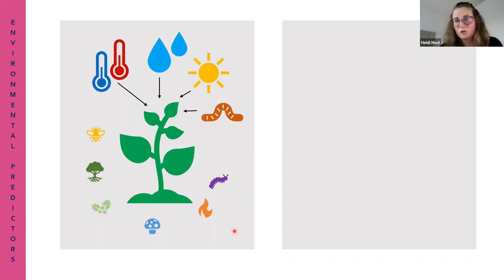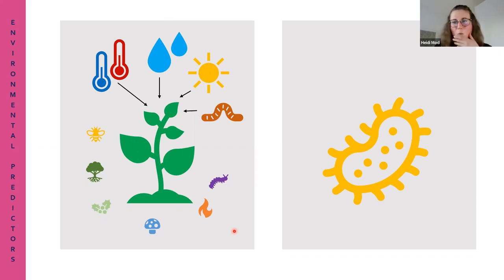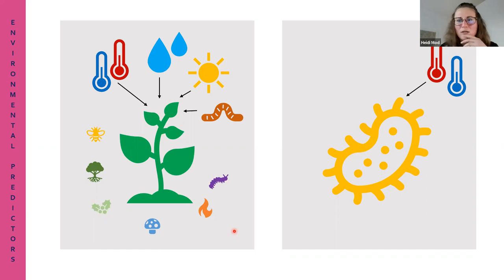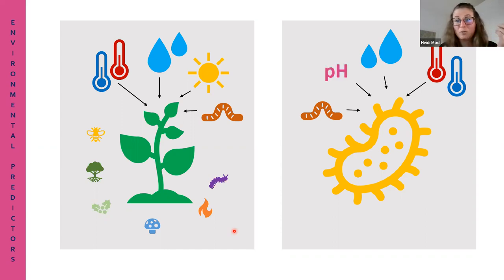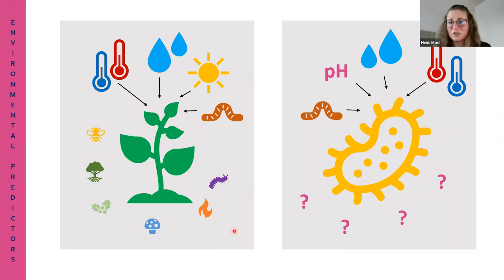We know quite well what drives the distribution of plant species, so one would think it's easy to choose the right predictors to build an SDM for a plant. But when we look at microorganisms, we probably know less. We know that temperature affects the metabolism of different microorganisms, moisture is clearly a resource, soil nutrients and pH - which appears as a super-influencer especially for soil bacteria - also matter. But it is not as well-known or as well-researched in the modeling literature as it is for plants.